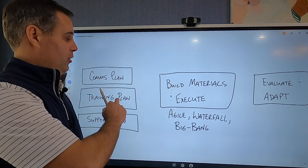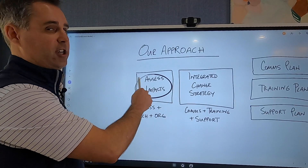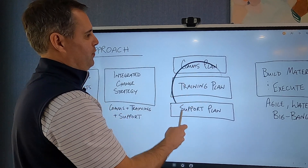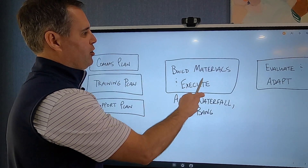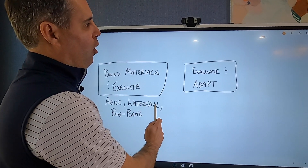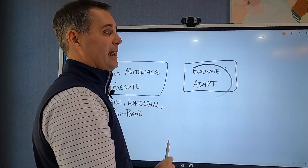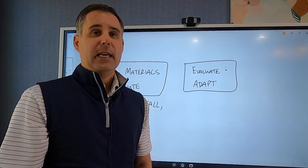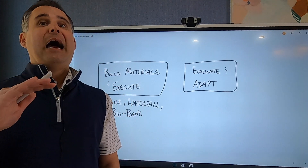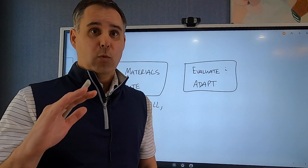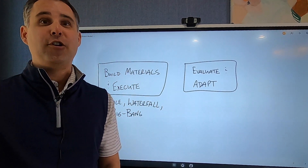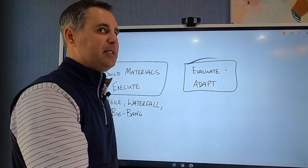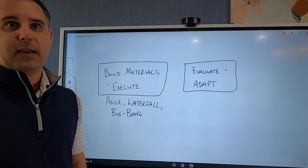To recap: you have your assessment of what the change is, a holistic integrated strategy, tactical plans derived from that strategy, and then execution. Throughout, especially in agile, we are always evaluating and adapting. A common piece of feedback on large projects is the organization saying to dial back the communications. We hear that and adapt — we just didn't want to under-communicate. We recycle and adapt all the way through.